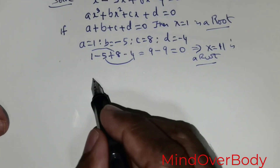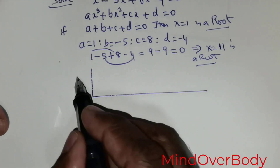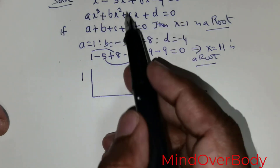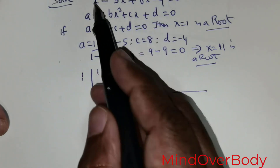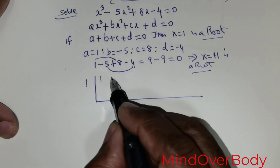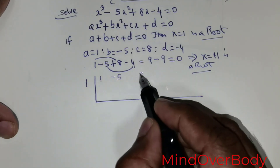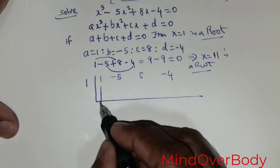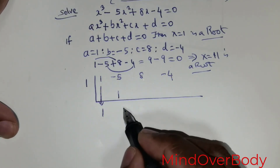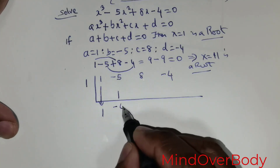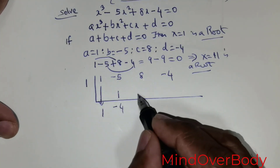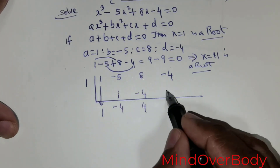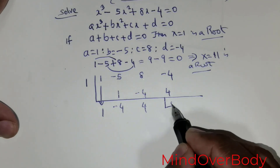Once we confirm that, we use synthetic division. Place 1 as the divisor and write the coefficients: 1, negative 5, 8, and negative 4. Bring the 1 down. 1 times 1 is 1; 1 plus negative 5 gives negative 4. Negative 4 times 1 is negative 4; negative 4 plus 8 gives positive 4. 4 times 1 is 4.